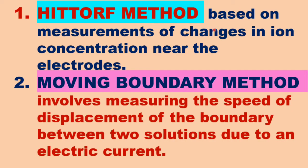The Hittorf method is based on the measurement of changes in ionic concentration in the vicinity of the electrode due to the passage of electric current during electrolysis. Whereas the moving boundary method is based on measuring the speed of displacement of the boundary between two solutions due to the passage of electric current.